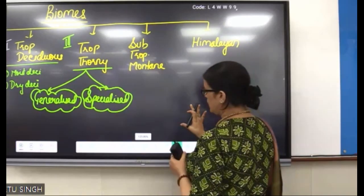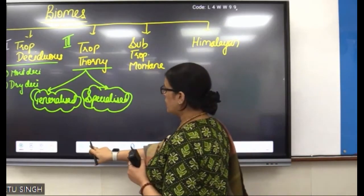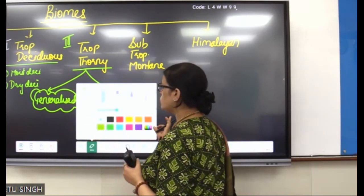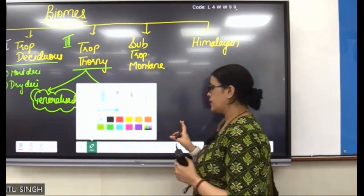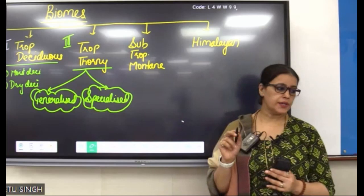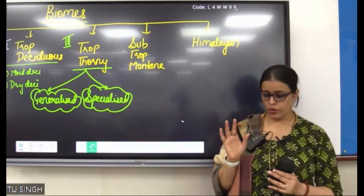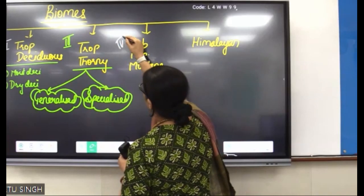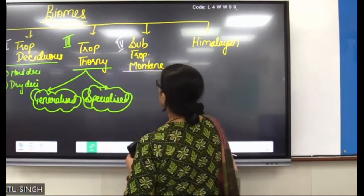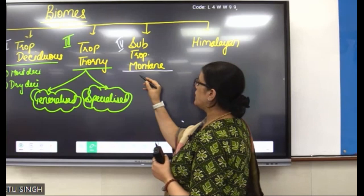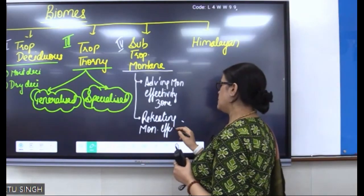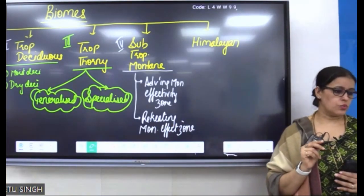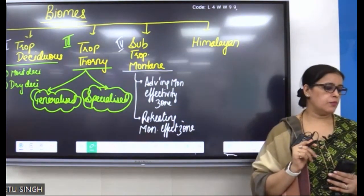Fourth biome: Subtropical Mountain and Himalayan. Subtropical Mountain can be divided into three subcategories — it is biome number four. How many subtypes can we demarcate? Two: Advancing Monsoonal and Retreating Monsoonal.